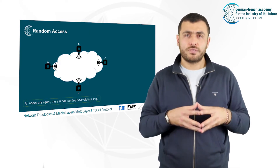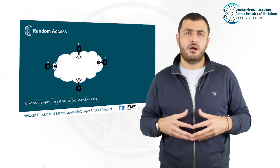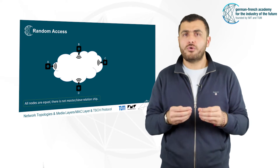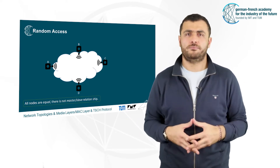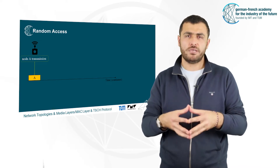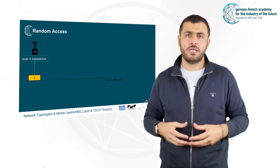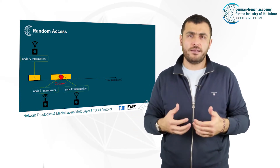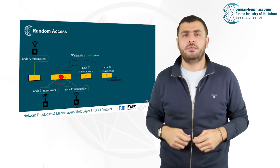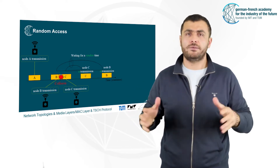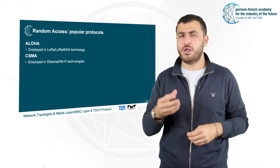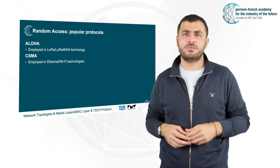In random access, or contention-based methods, distributed algorithms are employed where all nodes have an equal role. No node can permit or forbid another node from transmitting a frame. When a node has a frame to send, it may listen to the radio channel, and if it is free, it will transmit its frame. If the transmission fails because another node transmitted at the same time, it will try again later using a random delay. Popular random access protocols include Aloha, used in IoT for LoRa technology, and CSMA, used in Wi-Fi.